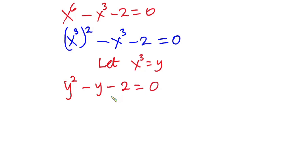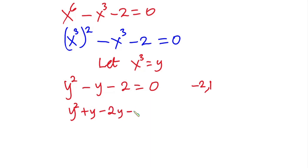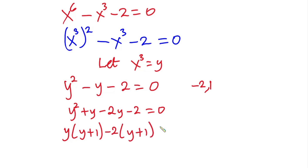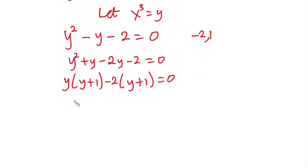From here I'll look for two values that when multiplied give negative 2 but when summed give negative 1. Those numbers are negative 2 and 1. So I'll rewrite the equation as y squared plus y minus 2y minus 2 equals zero. Factoring, we get y(y plus 1) minus 2(y plus 1) equals zero, giving (y plus 1)(y minus 2) equals zero.